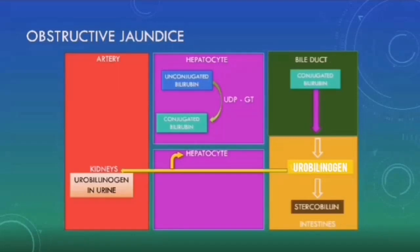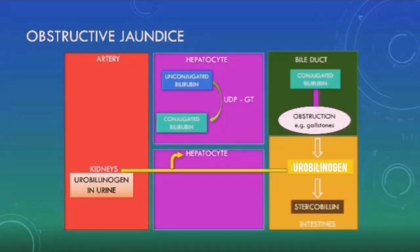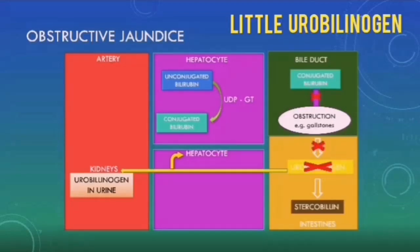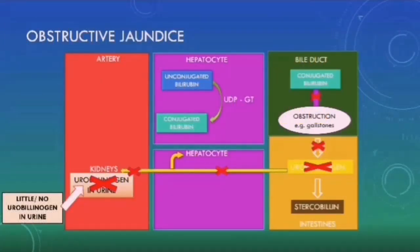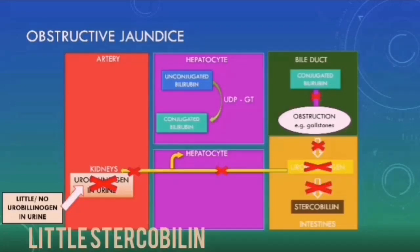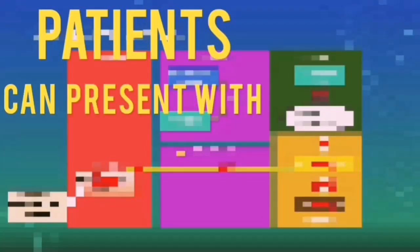In obstructive jaundice, there is some kind of obstruction to the flow of conjugated bilirubin in the bile ducts — this could be due to gallstones, among a number of causes. The conjugated bilirubin will not be able to pass into the intestines, meaning there will be very little or no urobilinogen being made. Very little urobilinogen will be taken up by the hepatocytes, so very little will reach the kidneys. Patients with obstructive jaundice will therefore have very little or no urobilinogen in their urine. The lack of urobilinogen in the intestines also means very little stercobilin will be produced and very little excreted in the feces.